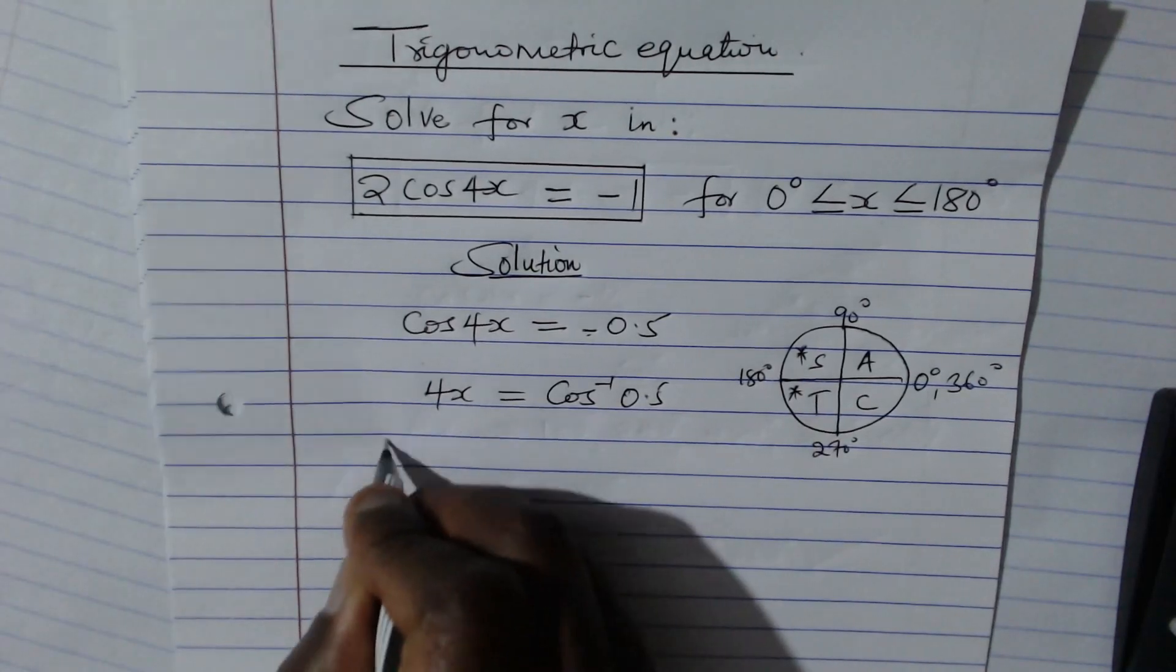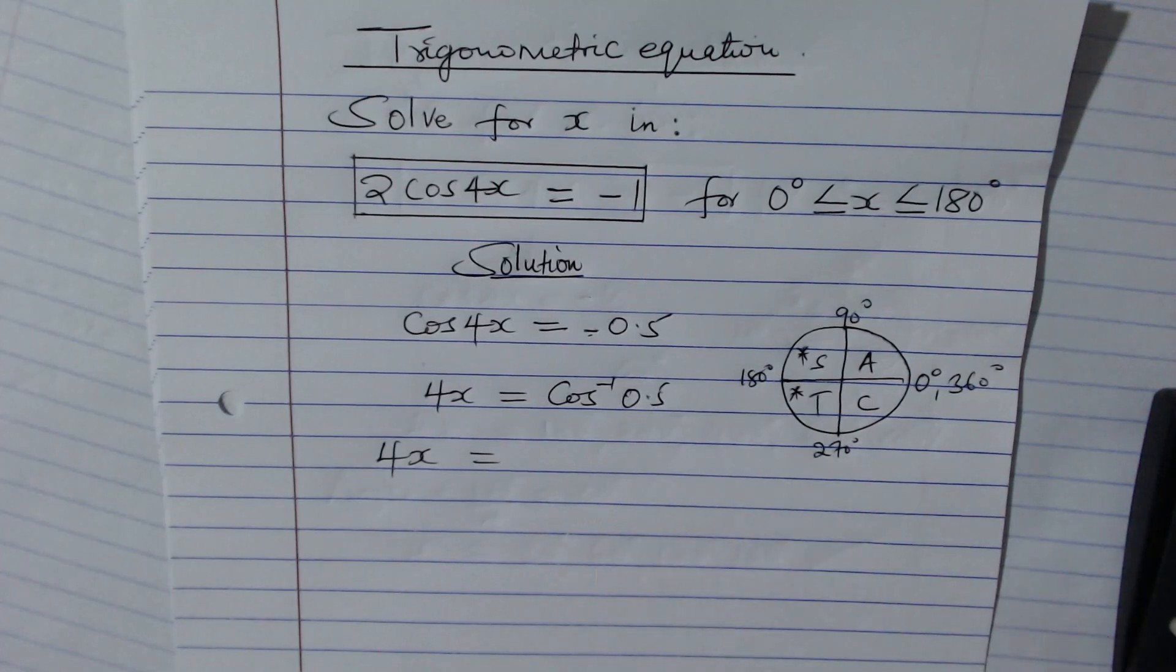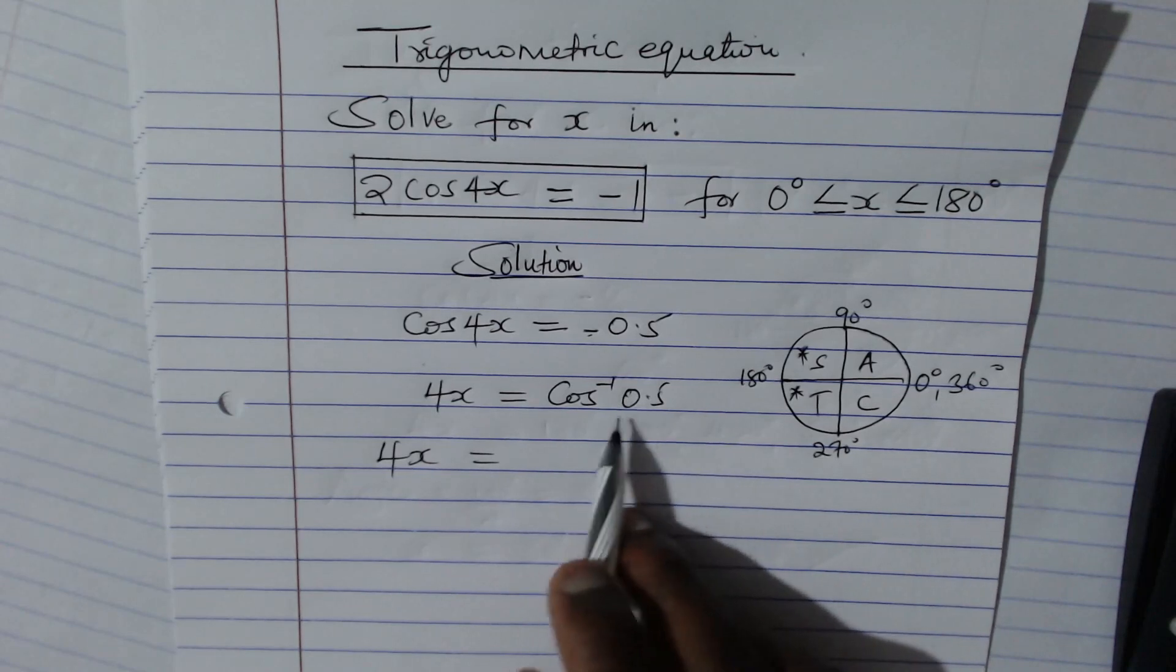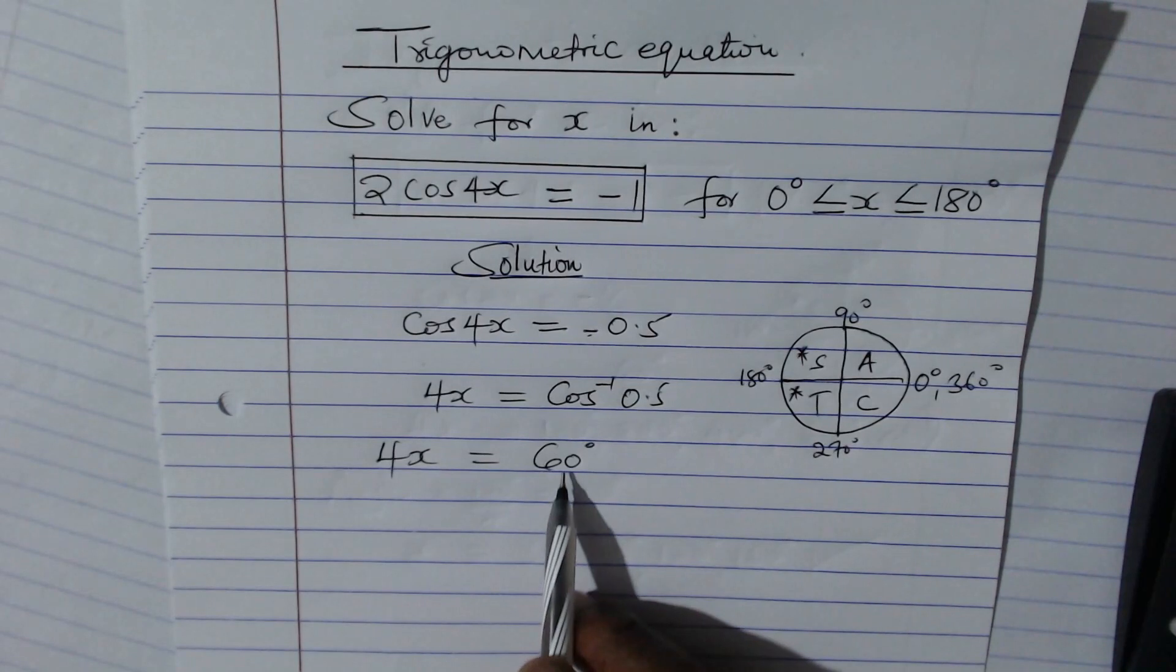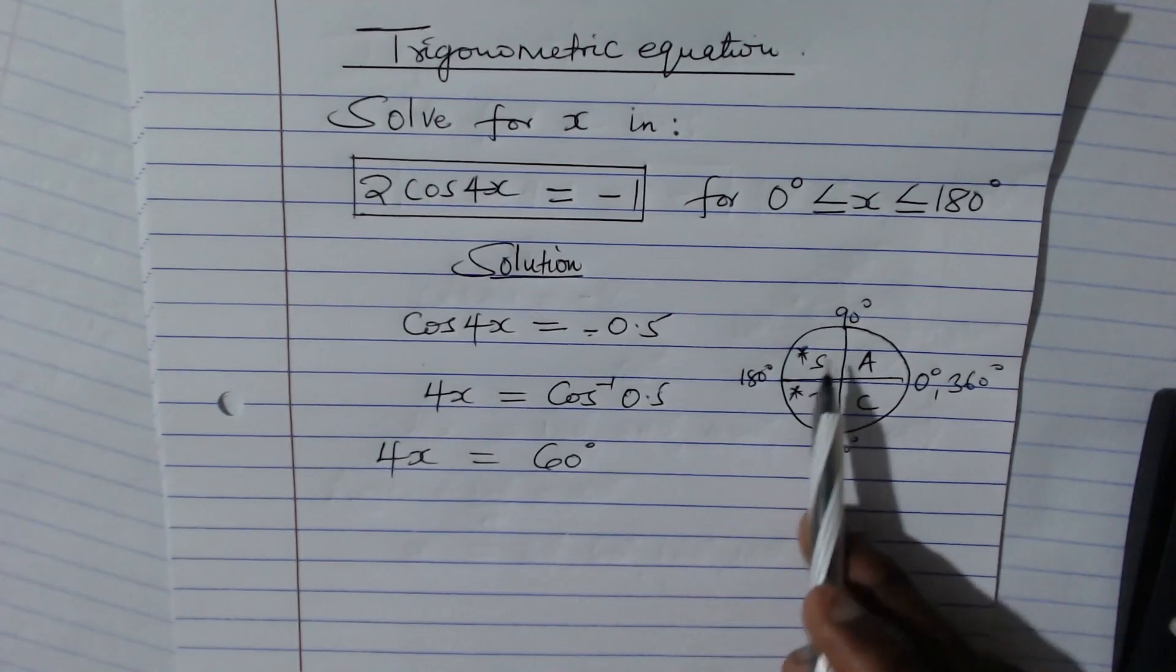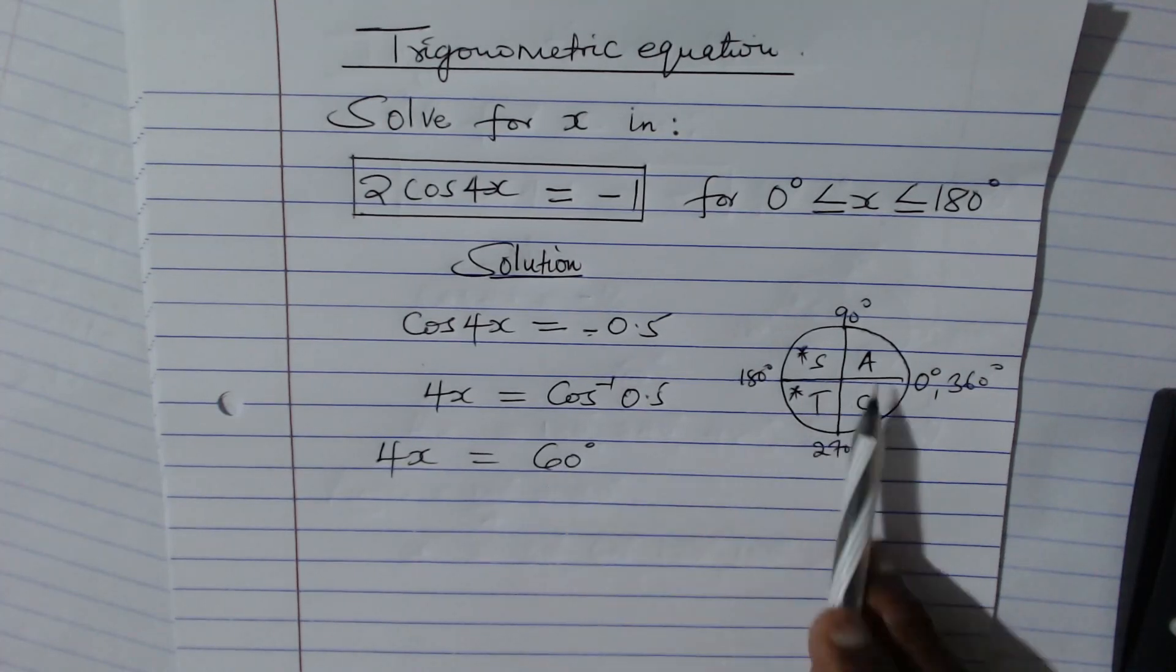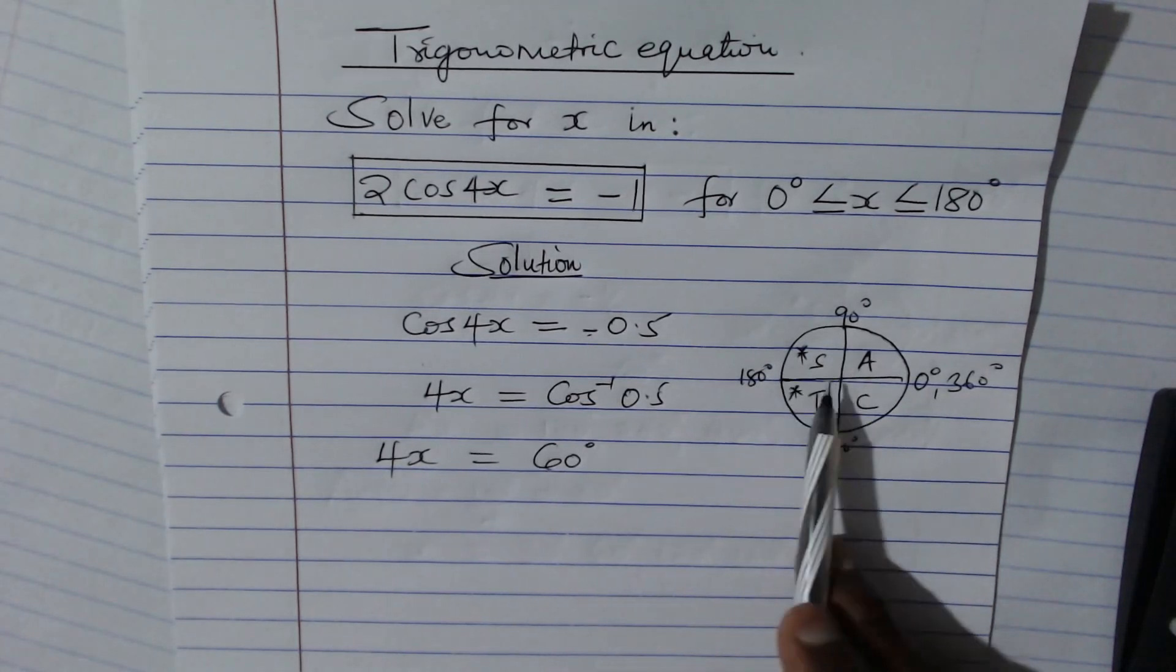So 4x, therefore, is equals to cos inverse of 0.5. We get cos inverse of 0.5, if using a calculator, you'll get that to be 60 degrees. So these 60 degrees will help us to get all the angles that are in the second quadrant and the third quadrant, and that is where we have cosine being negative. So 60 will not be applicable because it's in the first quadrant and the angle is not there. So this one will help us to calculate for the angle.